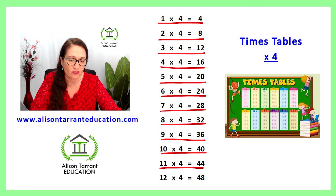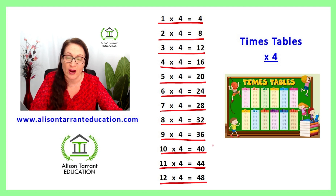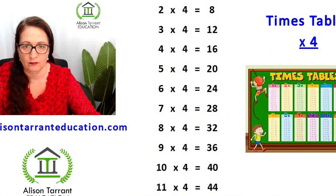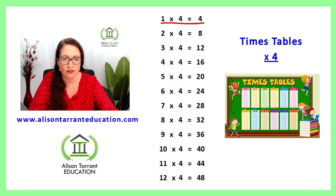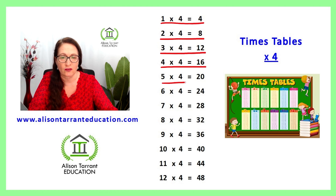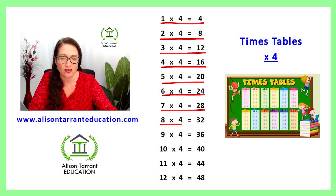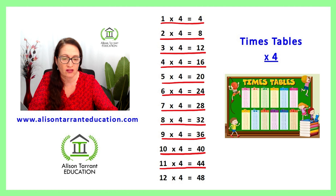Well done. Let's practice that again. 1 times 4 is 4, 2 times 4 is 8, 3 times 4 is 12, 4 times 4 is 16, 5 times 4 is 20, 6 times 4 is 24, 7 times 4 is 28, 8 times 4 is 32, 9 times 4 is 36, 10 times 4 is 40, 11 times 4 is 44, 12 times 4 is 48.